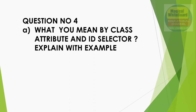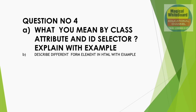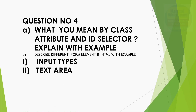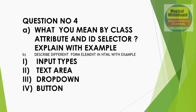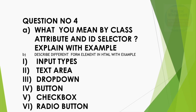Question number 4: What do you mean by class attribute and ID selector? Explain with example — CSS class attribute and ID selector. Next: discuss different form elements in HTML, such as input types, text area, dropdown, button, checkbox — form elements with tags, examples, and code details.